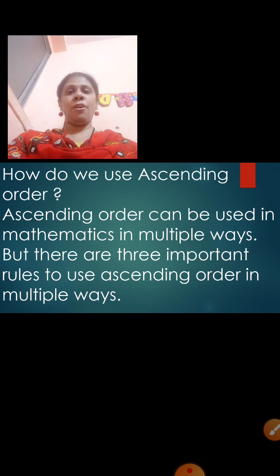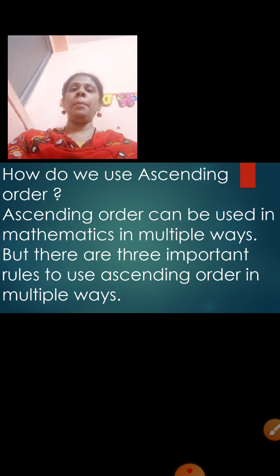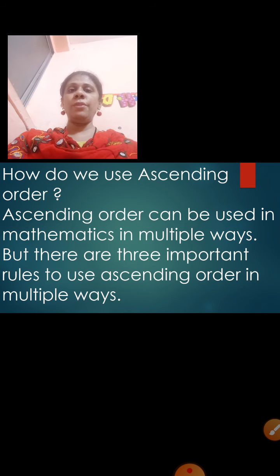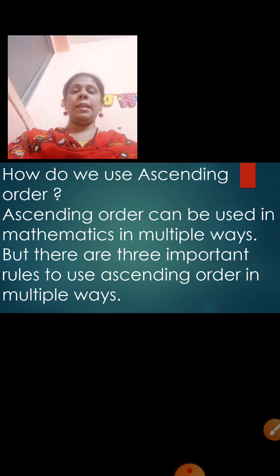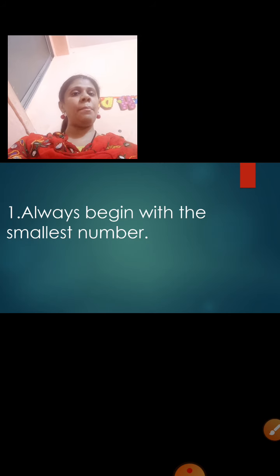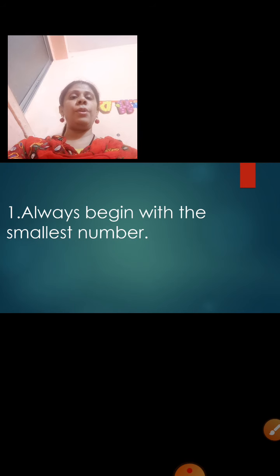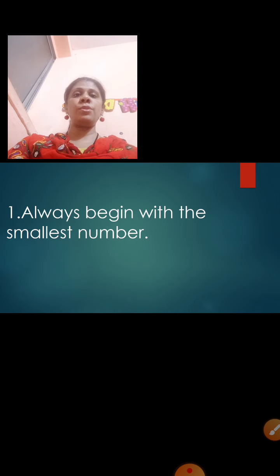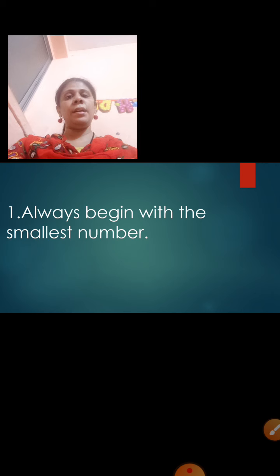How do we use ascending order? Ascending order can be used in mathematics in multiple ways, but there are three important rules. Rule number 1: Always begin with the smallest number. In ascending order, you are always going to start with the smallest number. You have to find which is the smallest number and start with it.